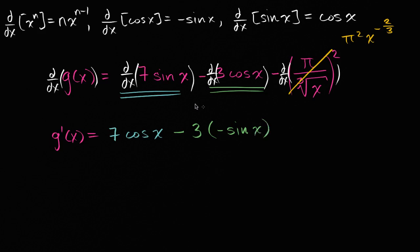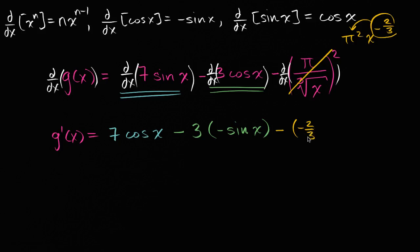And then finally, in the last term, we just apply the power rule. We have the negative two-thirds — let's not forget the minus sign out front. So you multiply the exponent times the coefficient: it's negative, and then negative two-thirds times pi squared, times x to the negative two-thirds minus one power. That gives us negative two-thirds minus one power.